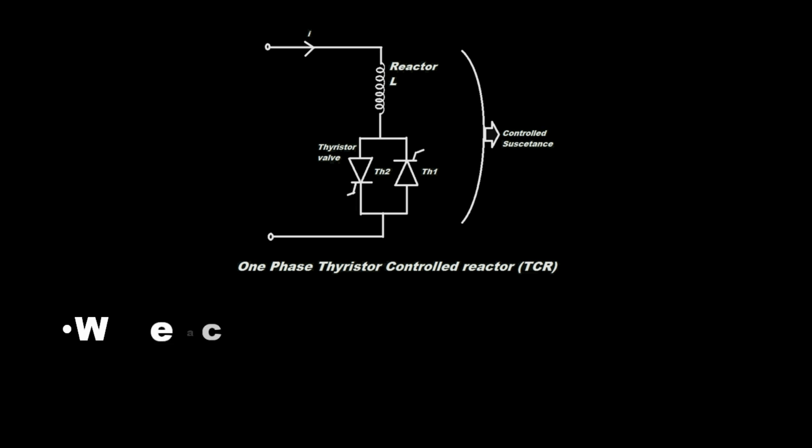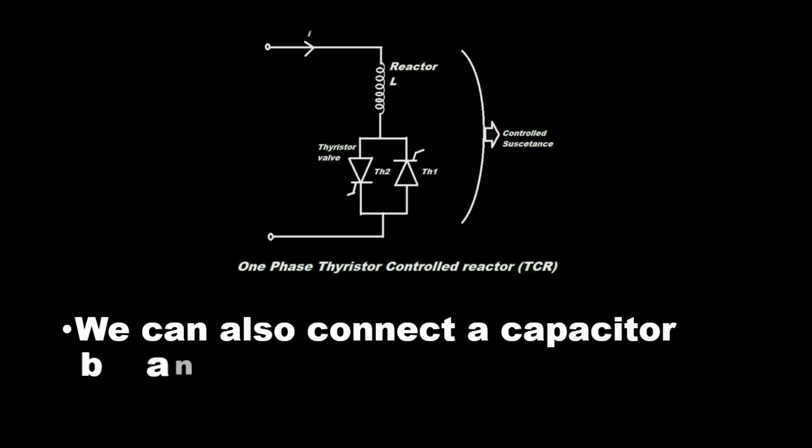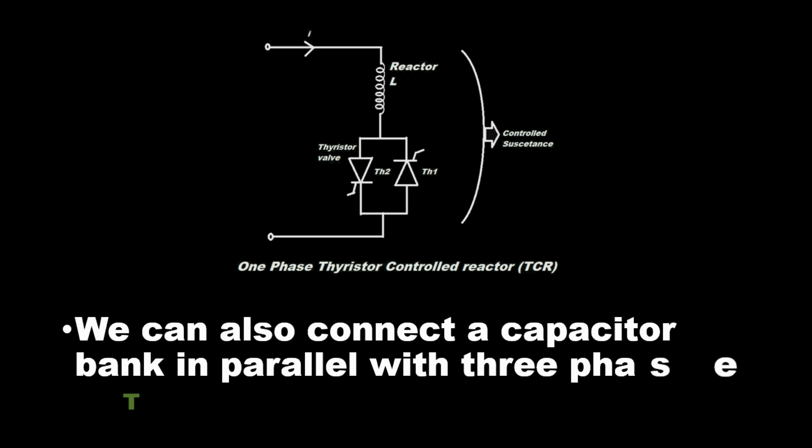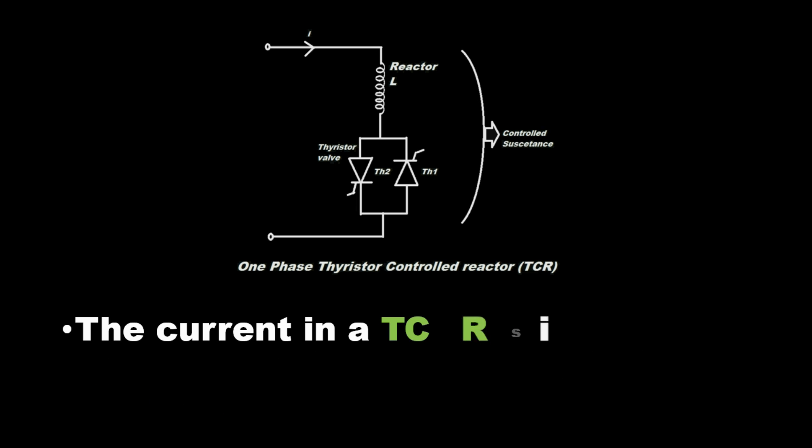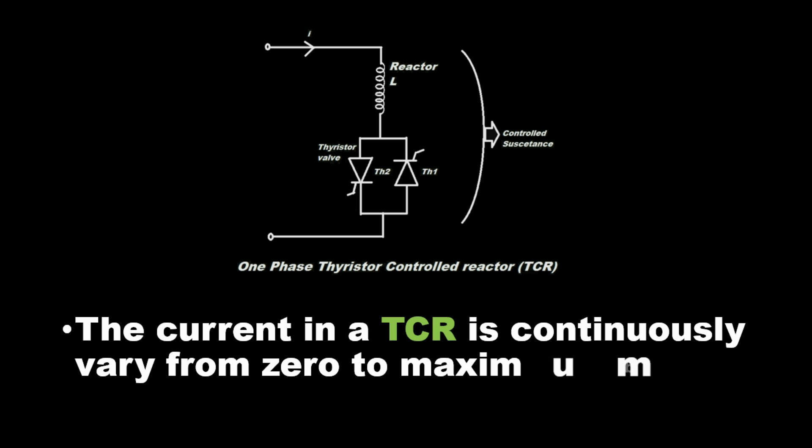We can also connect a capacitor bank in parallel with three-phase TCR. The current in a TCR is continuously varied from zero to maximum by phase control.